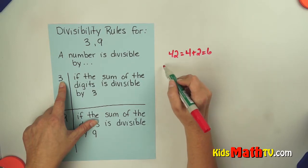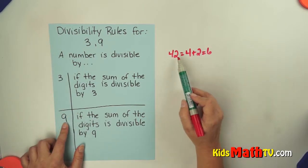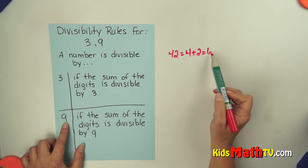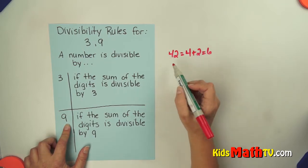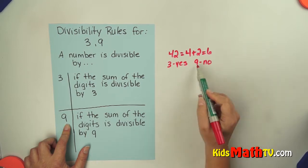So it divides by 3, but let's check for 9. If I add up the digits, 4 plus 2 is 6. 6 does not divide by 9 evenly. So 42 is divisible by 3, but not divisible by 9.